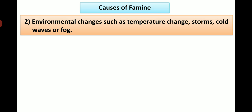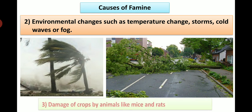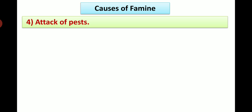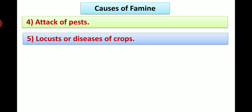Environmental changes such as temperature change, storms, cold waves or fog. Third cause: damage of crops by animals like mice and rats. Fourth: attack of pests. Fifth: locust or diseases of crops.